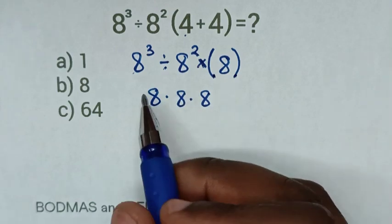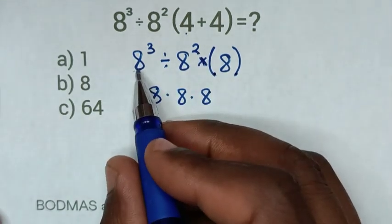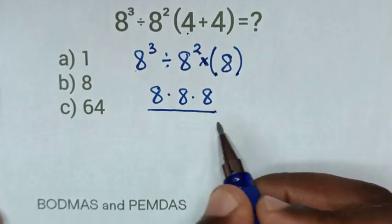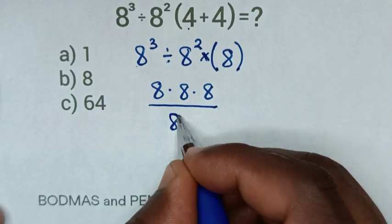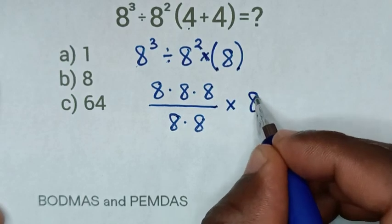Now from this division of 8 power 3 divided by 8 power 2, it's the same as 8 power 3 over 8 power 2. So 8 power 3 is 8 times 8 times 8, then over 8 power 2 is 8 times 8, then times this 8.